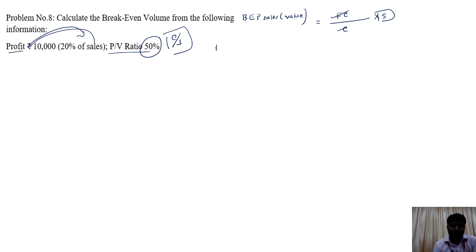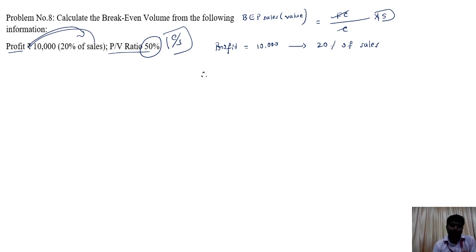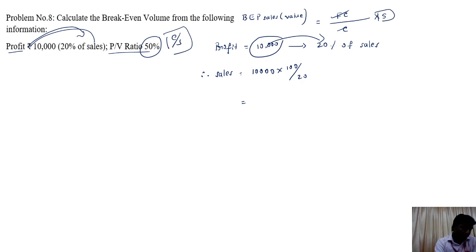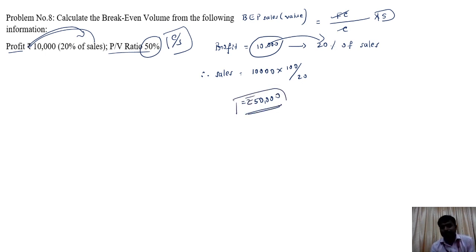This is a bit interesting. Profit is given as rupees 10,000, which is 20% of sales. Therefore we can calculate sales: sales equals 10,000 into 100 divided by 20, which equals rupees 50,000. Verify: 20% of 50,000 equals 10,000. So the value of sales is rupees 50,000.